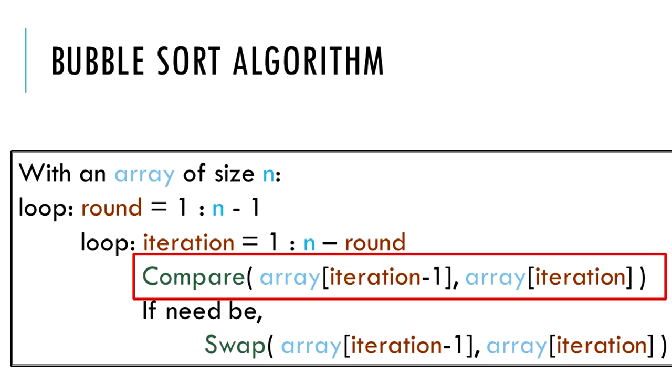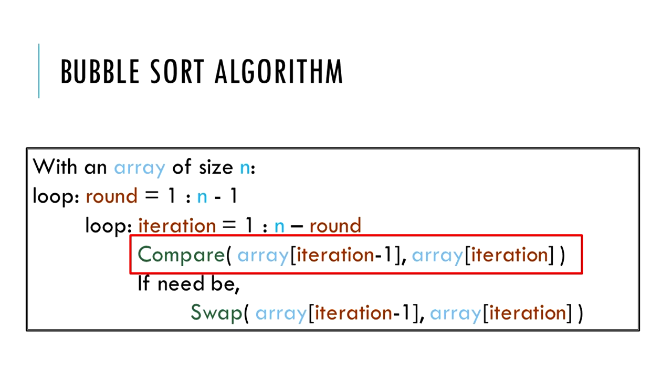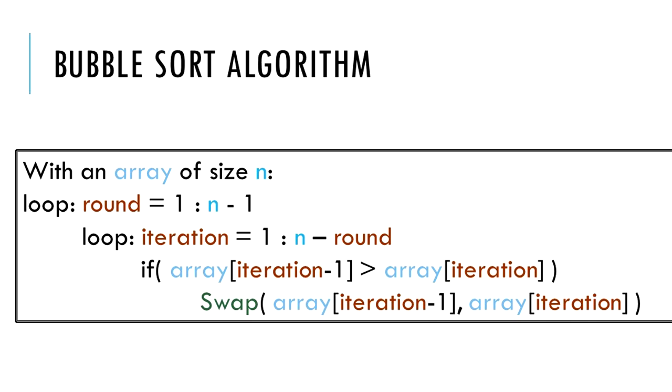These operations for the upcoming examples can be summarized as this. Here, the array elements get swapped if the previous element is greater than the current element.